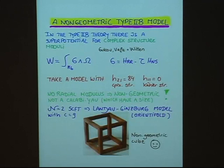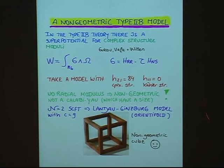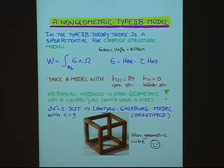Let me describe the non-geometric type IIB model. In type IIB theory, there is a superpotential for the complex structure moduli determined by Gukov-Vafa-Witten. Here G is the three-form of the type IIB theory, a combination of the Ramond-Ramond three-form and the Neveu-Schwarz three-form. This tau contains the axio-dilaton. So if you would like to stabilize moduli fields in terms of fluxes only, you have to consider a model where we only have complex structure moduli but no Kähler structure moduli. We took a particular model with H²¹ equal to 84 and H¹¹ equal to 0.